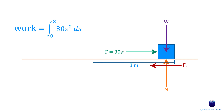Some books use W to represent work, while others use the capital letter U. The unit for work is joules, or 1 newton meter.